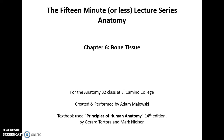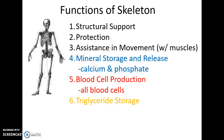This is a 15-minute lecture series on anatomy, chapter six: bone tissue. Functions of the skeleton include structural support so we can stand up, protection of soft delicate organs from damage, assistance in movement with the help of muscles, mineral storage and release especially calcium and phosphate, and blood cell production — all blood cells are produced in the red bone marrow.